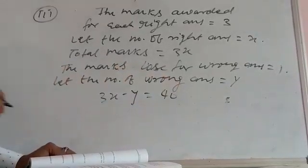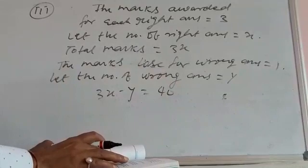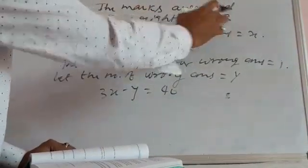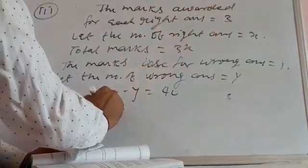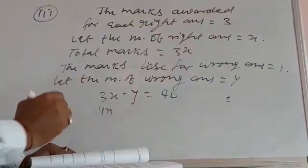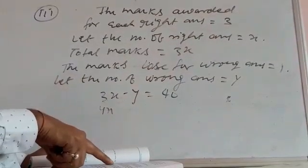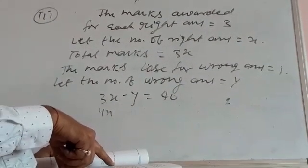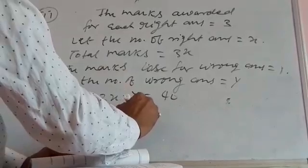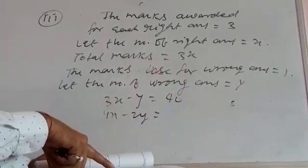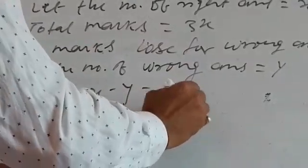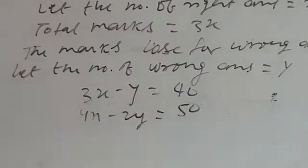The second condition: had 4 marks been awarded for each right answer and 2 marks deducted for each wrong answer, the student would have scored 50. So the second equation is 4x − 2y = 50. These are the two conditions for this part. You can now do the 4th and 5th parts similarly.